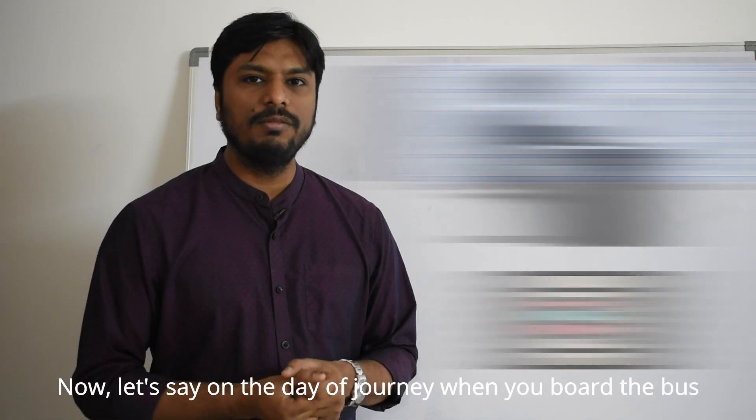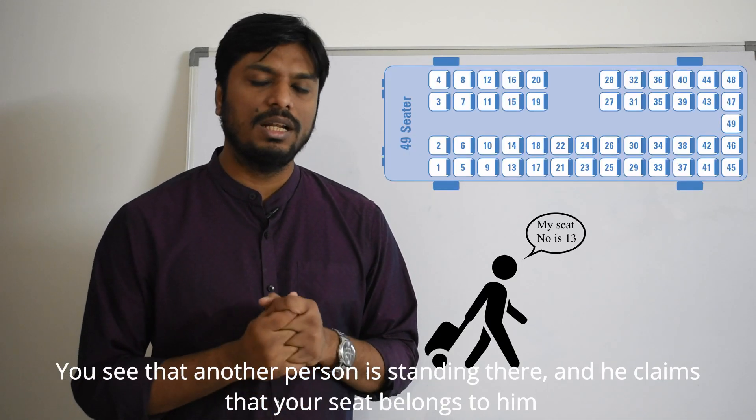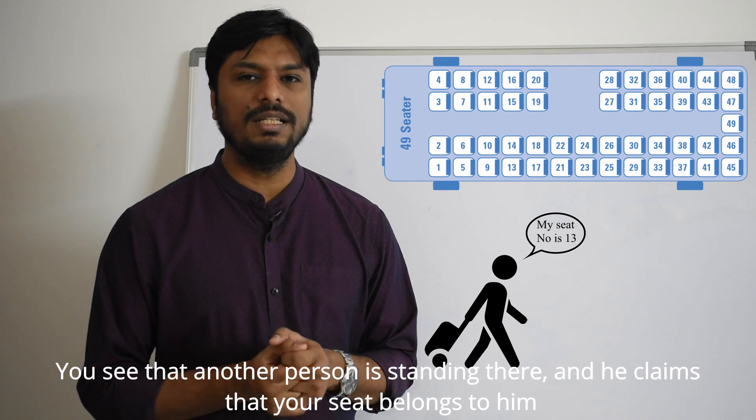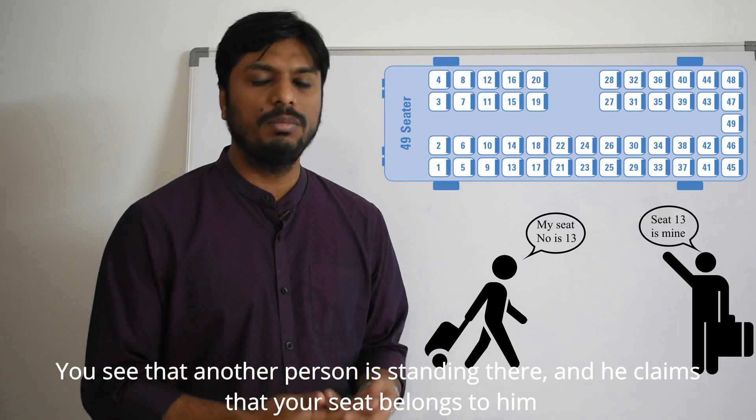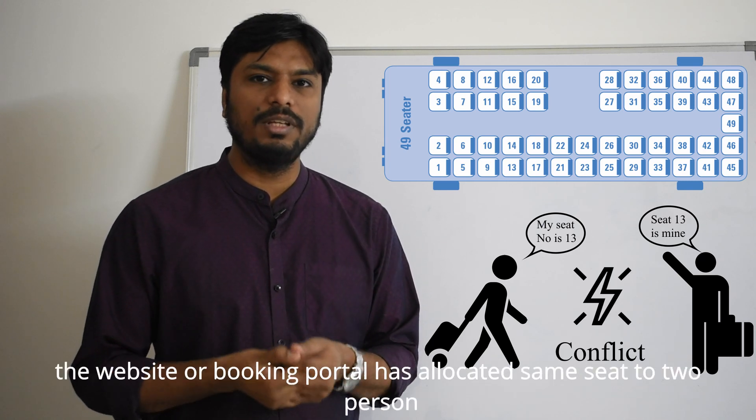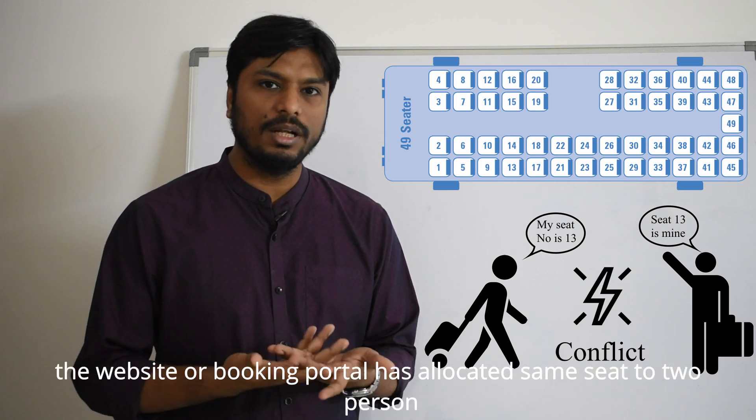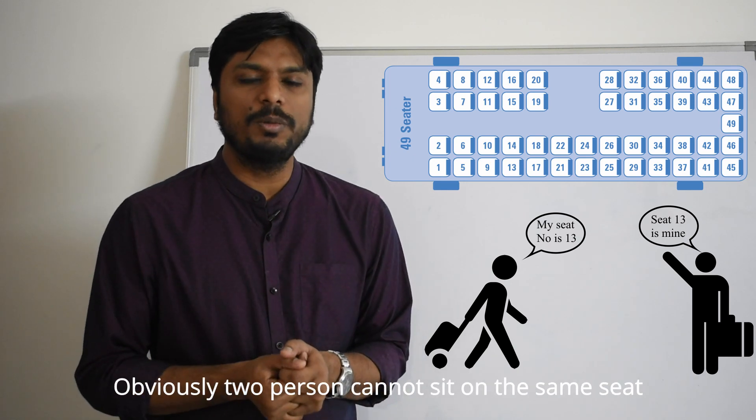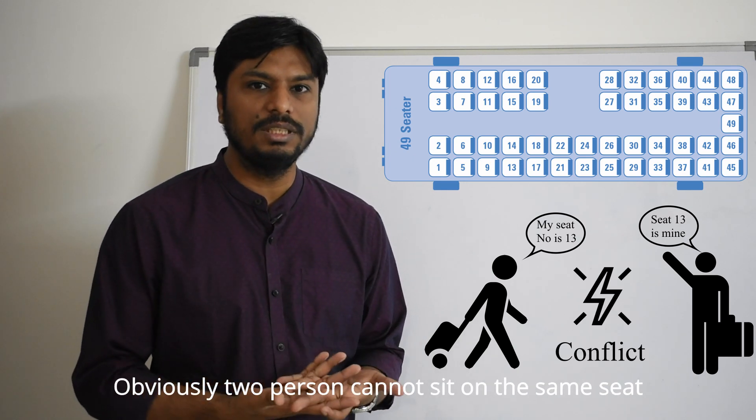Now let's say on the day of journey when you board the bus you see that another person is standing there and he is also claiming that the seat belongs to him. So what is the problem here? The problem is the website or the booking portal has allocated same seat to two persons. Obviously two persons cannot sit on the same seat.